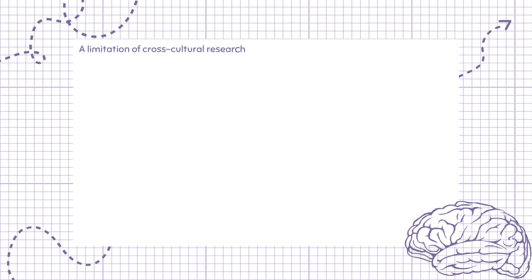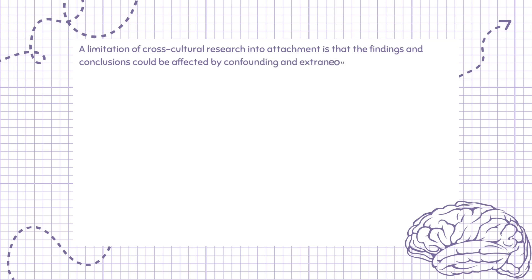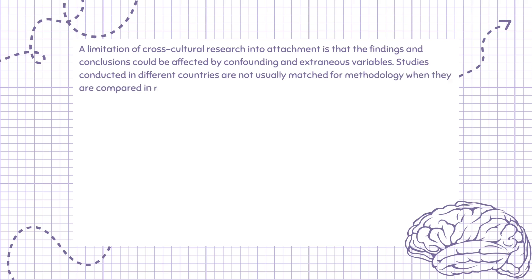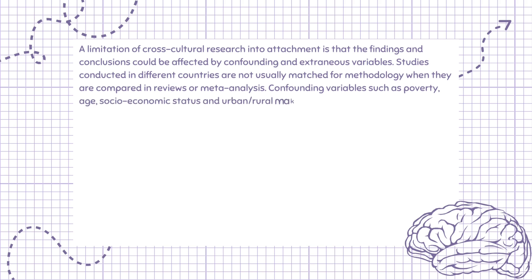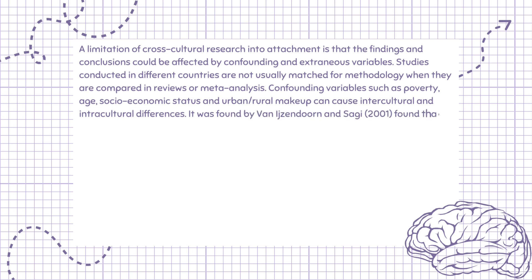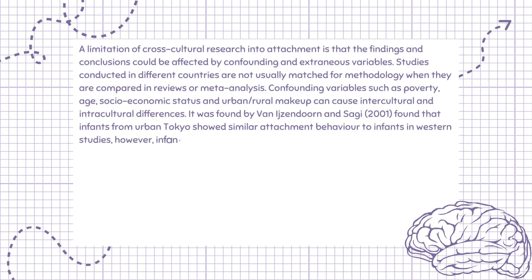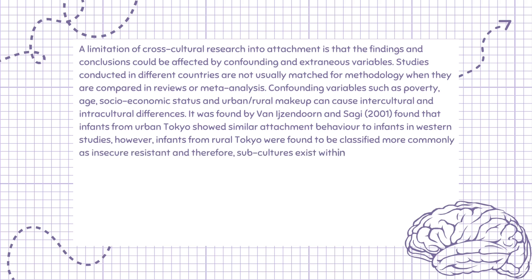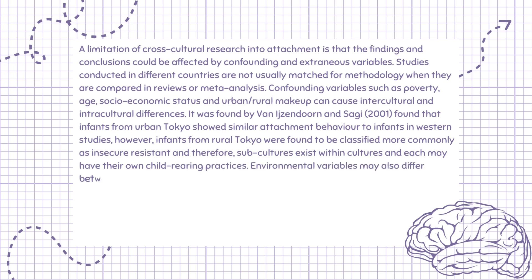A limitation of cross-cultural research into attachment is that findings and conclusions could be affected by confounding and extraneous variables. Studies conducted in different countries are not usually matched for methodology when compared in reviews or meta-analyses. Confounding variables such as poverty, age, socioeconomic status, and urban-rural makeup can cause intercultural and intracultural differences. Van IJzendoorn and Sagi (2001) found that infants from urban Tokyo showed similar attachment behavior to infants in Western studies; however, infants from rural Tokyo were more commonly classified as insecure-resistant, suggesting subcultures exist within cultures, each with their own child-rearing practices.